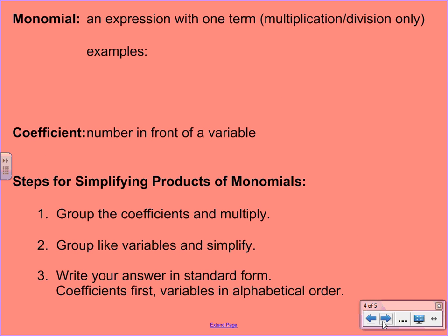Next, we're going to look at some definitions. The first important definition is for a monomial. If you underline that prefix mono, that should make you think of the word one, and that's actually part of our definition here. A monomial is an expression with one term. Now, I've put in parentheses here that you're only going to see multiplication and division with monomials. If you start seeing a plus sign or a minus sign, that's going to indicate that you actually have more than one term.